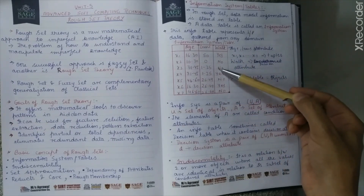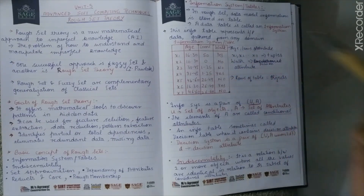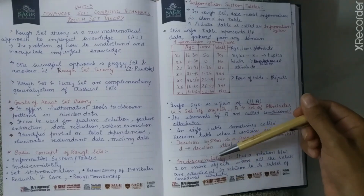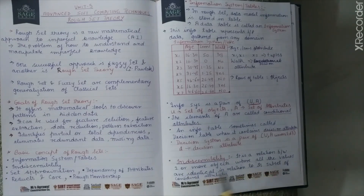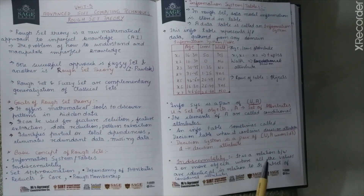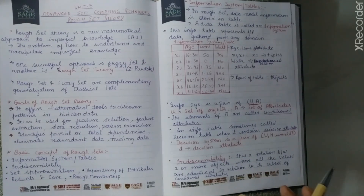This was our pictorial representation of the information system table. Next is indiscernibility. Indiscernibility is a relation between two or more objects where all the values are identical with respect to a subset of considered attributes.